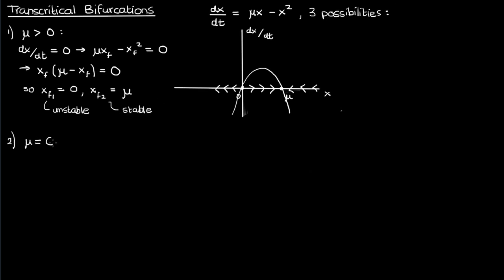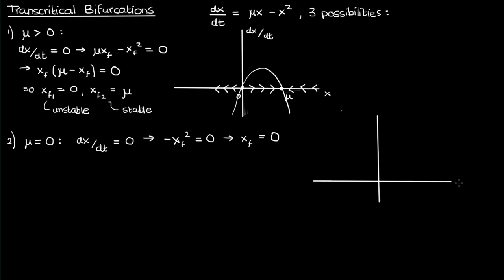But what if μ is zero? In that case, you only have one fixed point, which is at x equals zero. If you draw the phase portrait, you find that the fixed point at x equals zero is half-stable. If you start from a negative x, the system will diverge from zero, but if you start at a positive x, the system will converge to zero.